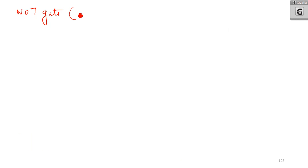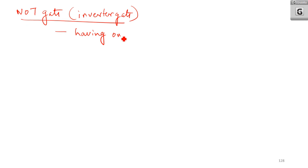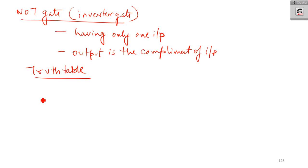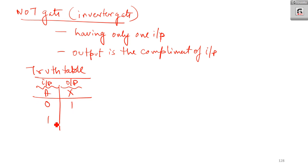So what is basically a NOT gate or inverter gate? A NOT gate has only one input, and the output is the complement of the input. Drawing the truth table: it has one input A and output S. If A is 0, output is 1; whereas when A is 1, the output is 0.